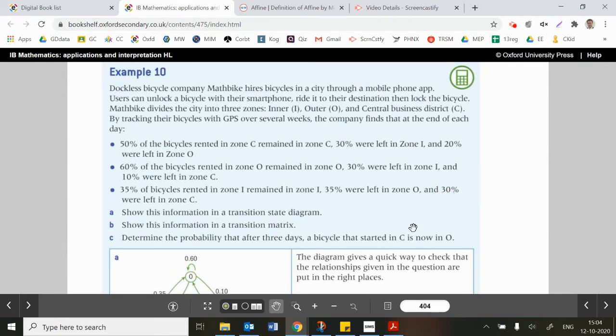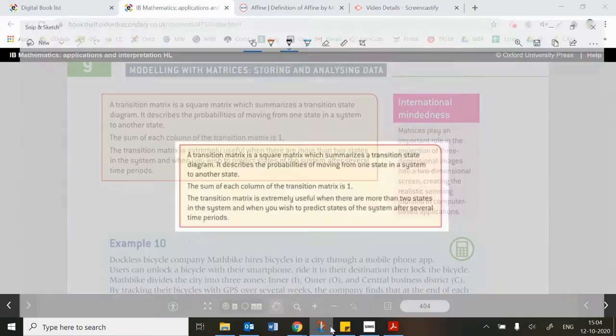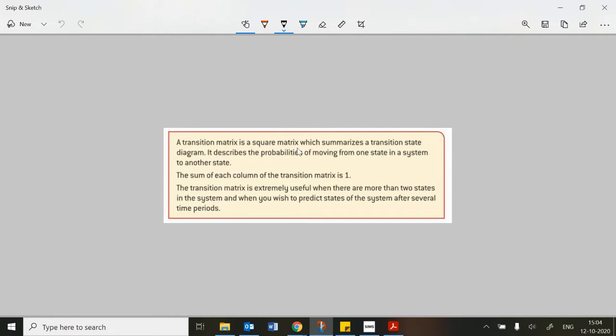Now let's just go back through a bit of theory here. So there's a nice little box up at the top. I've just copied this one as well. It says transition matrix is a square matrix. It has to be a square matrix because all of the outcomes where you start need to be still available at the end. So we're talking maybe, for example, if there's three states at the start, then there need to be three outcome states as well. And it summarizes the transition state diagram. It describes the probabilities of moving from one state in a diagram to another state.